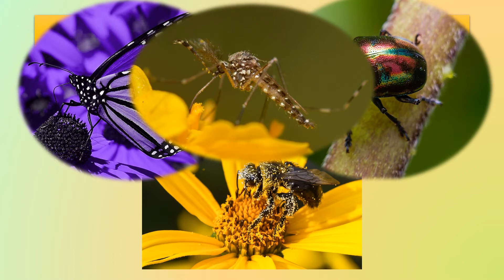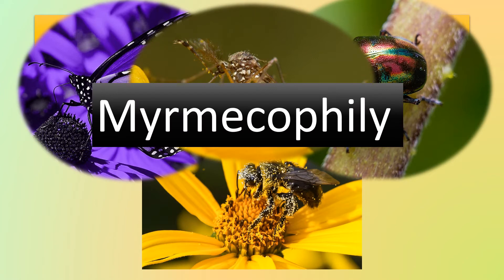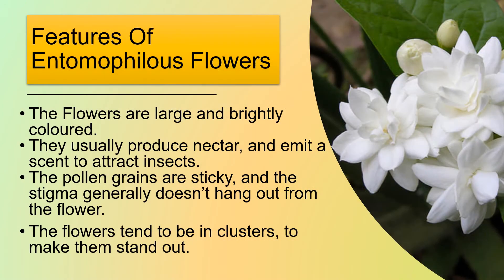Under entomophily is myrmecophily, which is when ants are the agents of pollination. The flowers are large and brightly colored; they usually produce nectar and emit a scent to attract insects. The pollen grains are sticky and the stigma generally doesn't hang out from the flower.